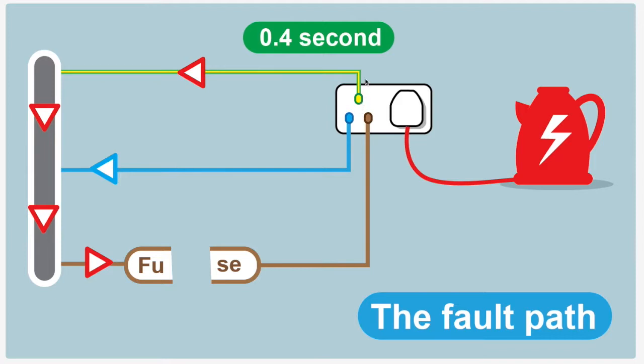This conductor takes the fault all the way back to the transformer in the street, then it comes back into your house, into the fuse, and trips the fuse. The fuse breaks and switches off the supply to the socket, making sure the kettle is no longer live. That's the actual fault path that happens if there's a fault, and it should happen very quickly—generally within 0.4 seconds, though it can take up to five seconds when everything is working correctly.